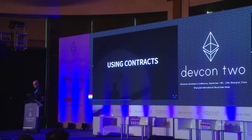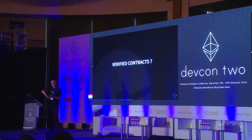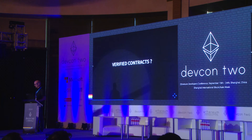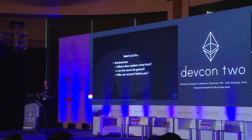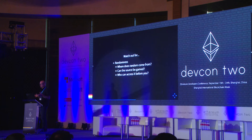Interacting with contracts: a verified contract means that what is deployed on the blockchain has a source code, and it can be verified that the source code when compiled and deployed corresponds to that. It doesn't mean it's been audited by a third party — only that the source code is available. Things to watch out for when interacting with a contract: does it use randomness in any way? Where does that random come from? Can the source of that random be gamed, and can anyone access it before you? In many cases, they can.